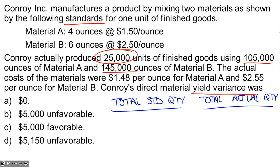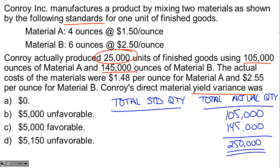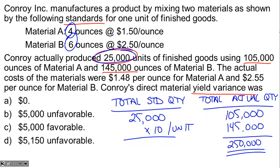We're talking about Material A and B together in total. They actually produced 25,000 units and used 105,000 ounces of Material A and 145,000 ounces of Material B, so in total they used 250,000 ounces actually. For the standard: they produced 25,000 units and should have used four ounces of A and six ounces of B — ten ounces per unit in total. So 25,000 units times ten ounces per unit means the standard was 250,000 ounces.